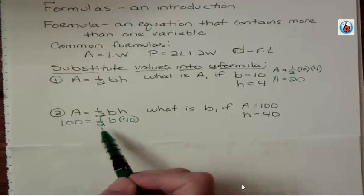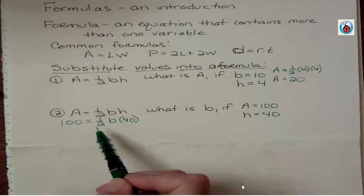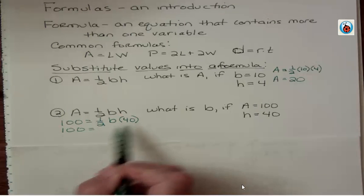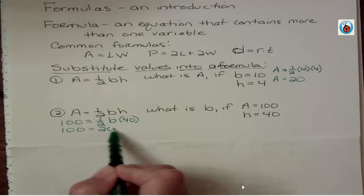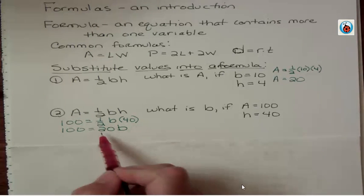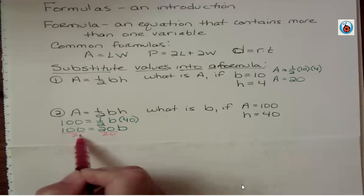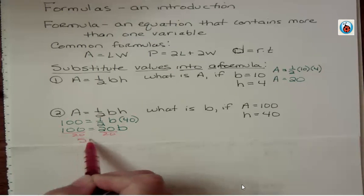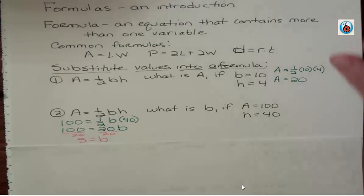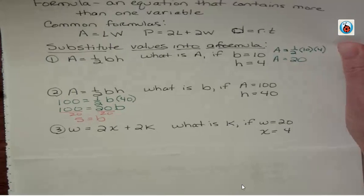Even though 1/2 is here and 40 is there, because of the commutative property, I can change the order. What is half of 40? That's 20. So we have 100 = 20b. How do I solve for b? Get rid of that coefficient by dividing both sides by 20, and you get b = 5. We plugged in the known values, substituted, and simplified to find the unknown value.